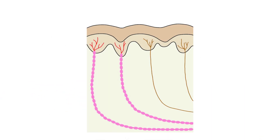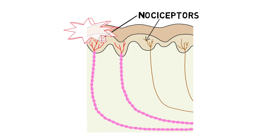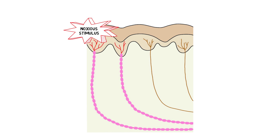Pain typically starts when nerve endings called nociceptors are activated. These nociceptors are found throughout the body and are usually activated in response to damage to tissue close to the nerve endings. Nociceptors can detect a range of noxious stimuli, including mechanical pressure, hot or cold temperatures, and certain chemicals released from damaged tissue.